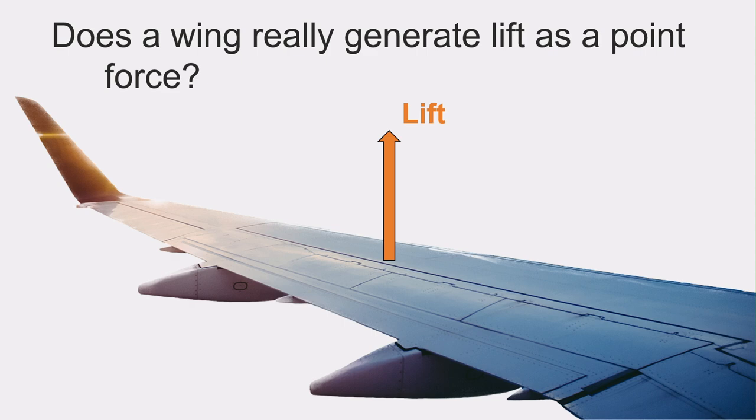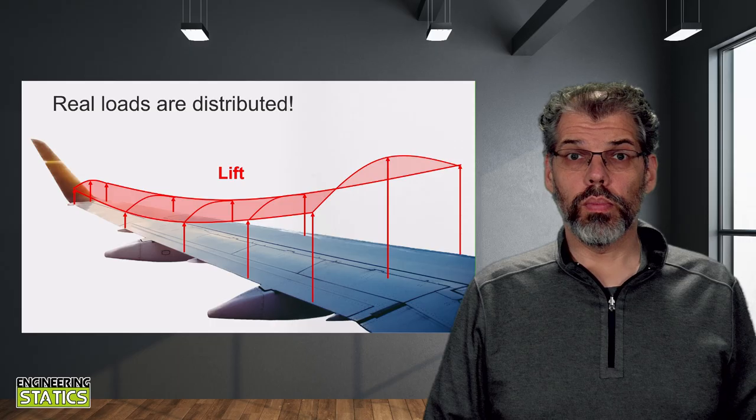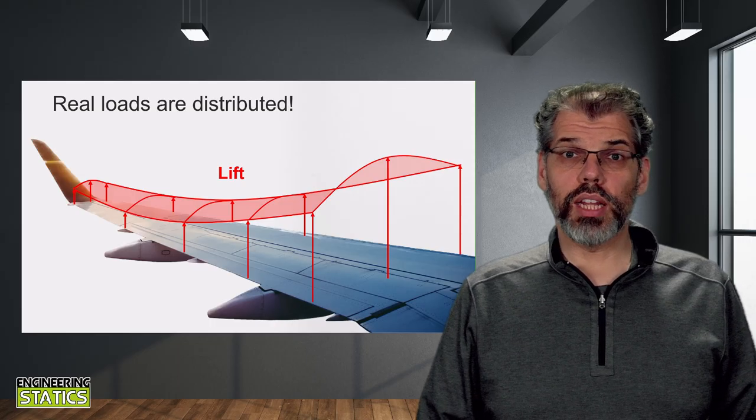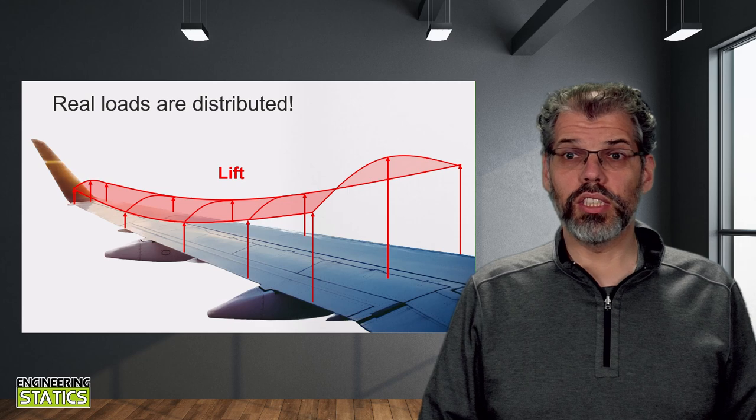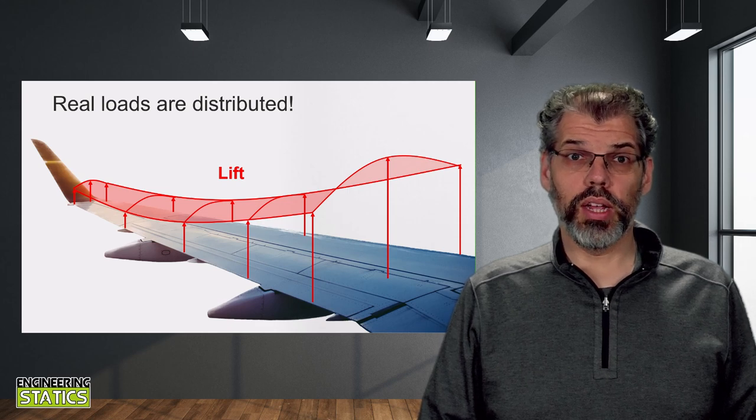Looking at it from just the lift perspective, does a wing really generate lift as a point force? Of course the answer is no. Hopefully it is intuitive that the lift generated by the wing is distributed over the entire wing, as shown here.